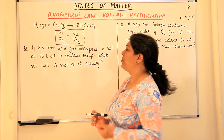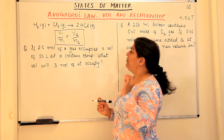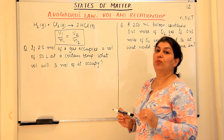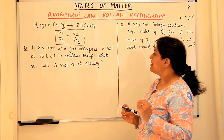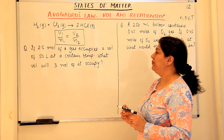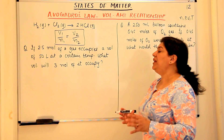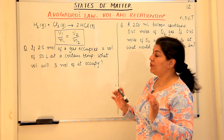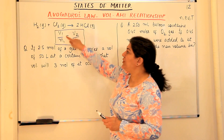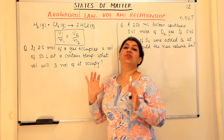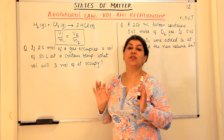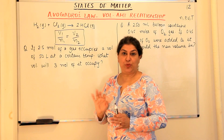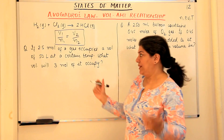Let's come to the first problem: If 2.5 moles of a gas occupies a volume of 50 liters at a certain temperature, what volume will 3 moles of it occupy? Out of the four variables, we will be given three in the question and the fourth one will have to be calculated using the mathematical equation. So let us do it.